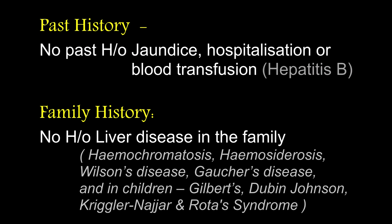Past history: there is no past history of jaundice, hospitalization or blood transfusion. There is no family history of liver disease. Which liver diseases are familial? Hemochromatosis, hemosiderosis, Wilson's disease, Gaucher's disease and glycogen storage diseases. And in children: Gilbert's disease, Dubin-Johnson syndrome, Crigler-Najjar syndrome and Rotor's syndrome.